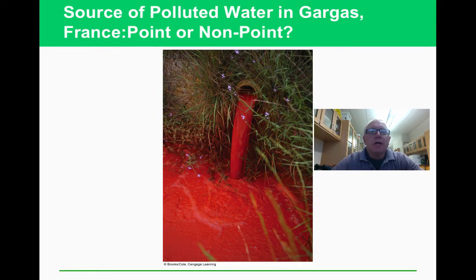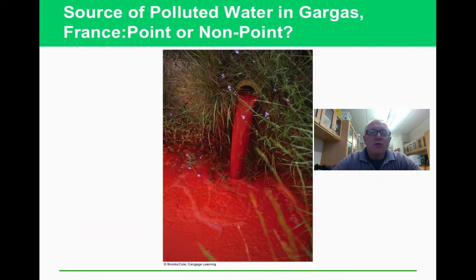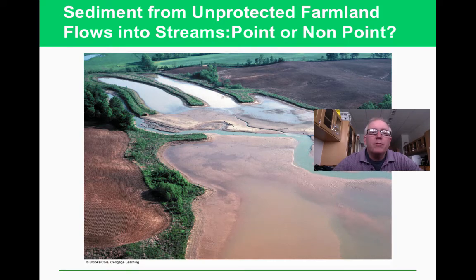A pipe discharging into water is a point source — you can tell exactly where it's coming from. Runoff from agricultural fields is a non-point source — you can't tell exactly where it came from.